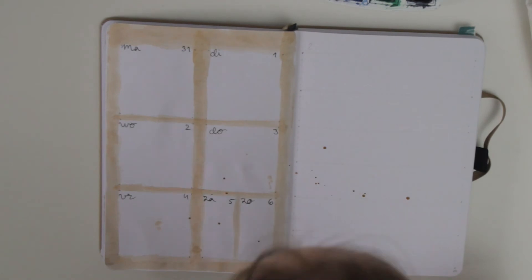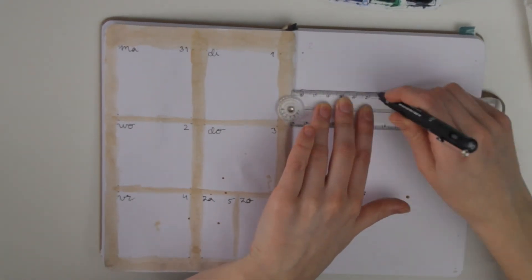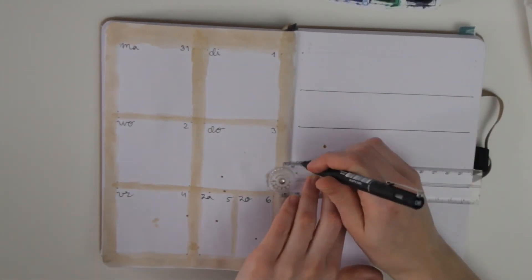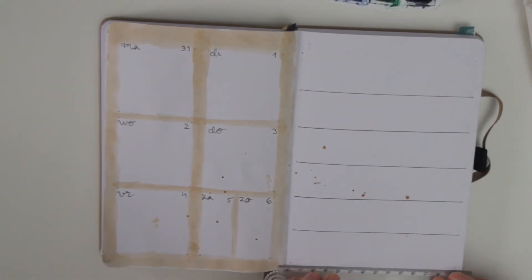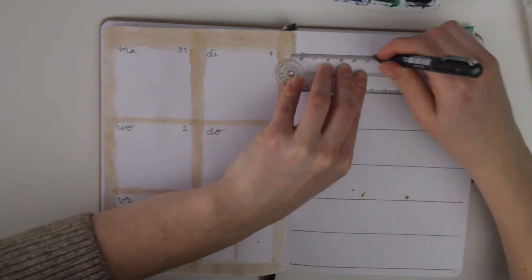And then on the right I used my ruler to kind of juxtapose that messiness on the left. And I made again six rows and then the sixth row is divided into two again.